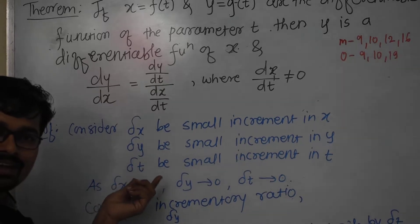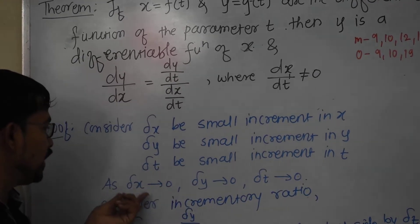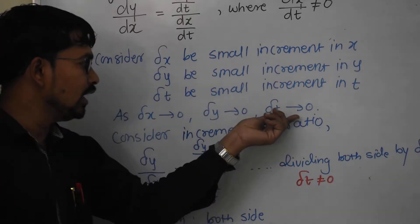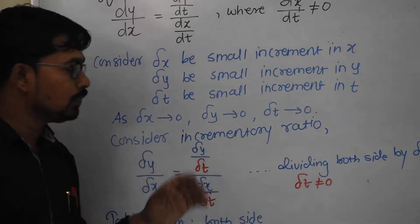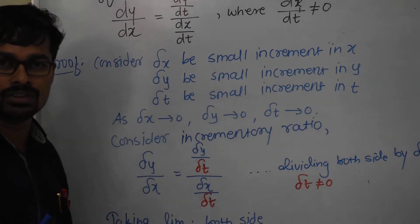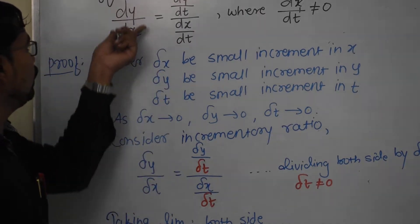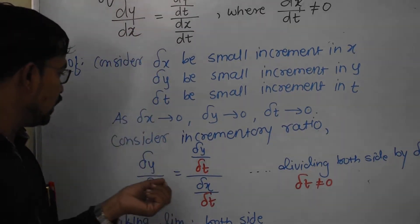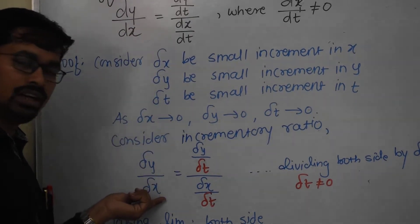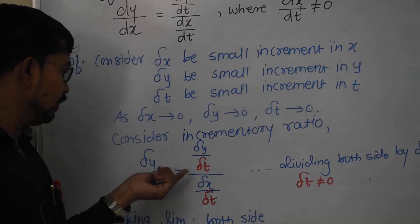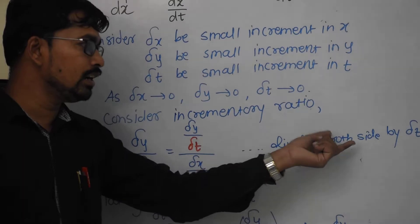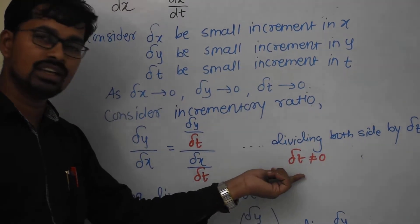Since delta x, delta y, and delta t are very small, we can write delta x tends to 0, delta y tends to 0, and delta t tends to 0. Now, consider delta y upon delta x. We can divide both numerator and denominator by delta t — that is, (delta y / delta t) divided by (delta x / delta t) — where delta t is not equal to zero.